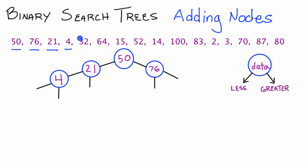Next we add 32. Starting at our root 50, 32 is less than 50 so we go down the left pointer. Then we compare 32 to 21 — 32 is greater than 21, so we go down the right pointer and place 32 there. So now we've added 32 to the tree.